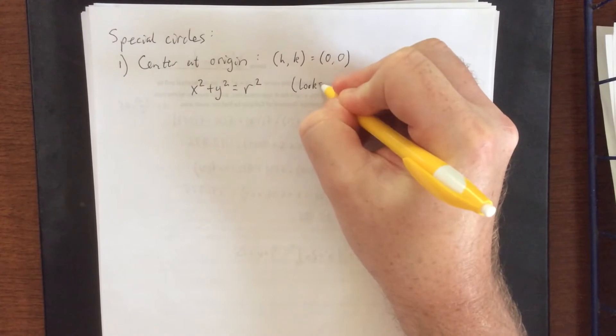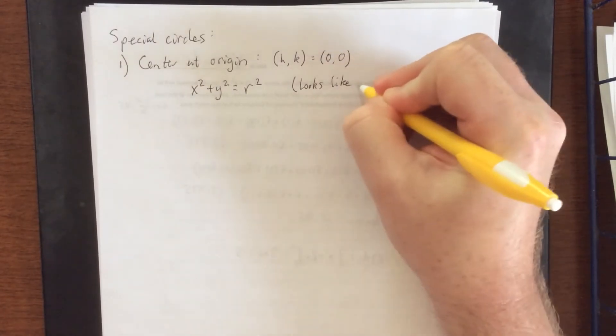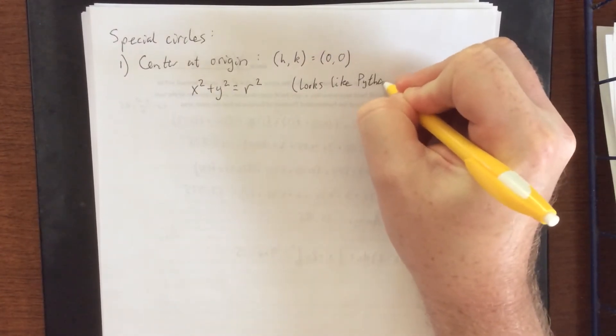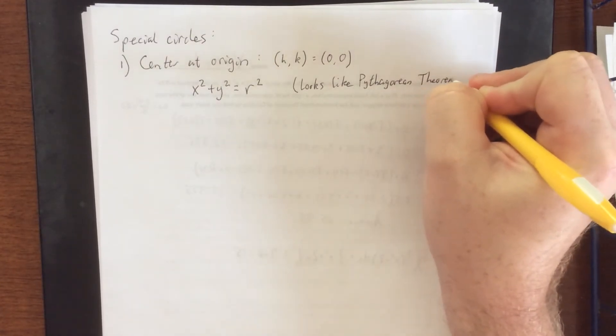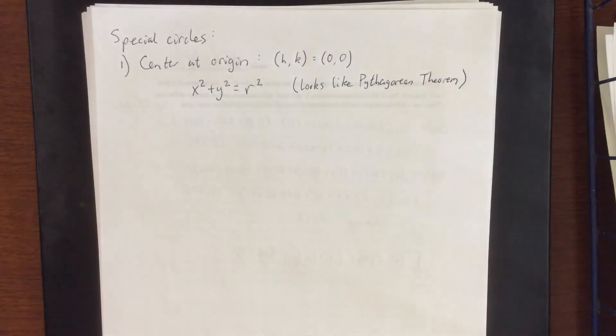And it looks an awful lot like the Pythagorean theorem. Pythagorean theorem uses different variables but it's still this thing squared plus this thing squared is equal to this thing squared. They are very closely related to each other.